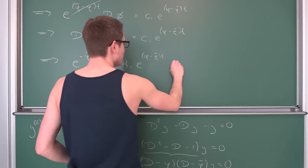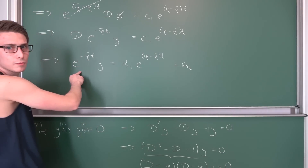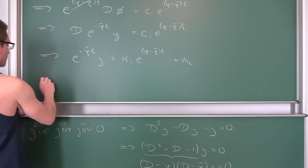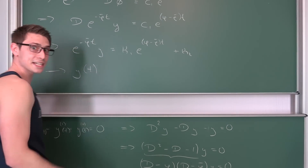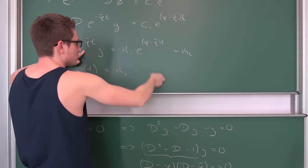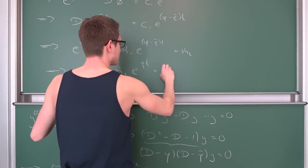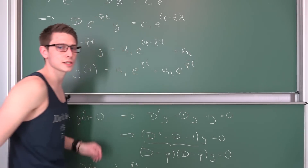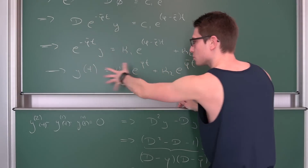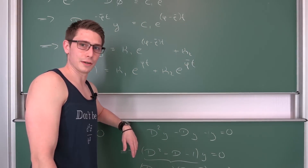Integrating both sides with respect to t gives us c₁ over (φ minus φ̄) times the exponential term — and some constant over another constant is just a constant. Meaning overall, we are going to give this new constant the name κ₁. We have e^(φ̄t) · y equals κ₁ · e^((φ−φ̄)t). After integration of our second order linear homogeneous ODE, we end up with another constant, κ₂. After all the integration and multiplying both sides by the multiplicative inverse of e^(−φ̄t) — which is e^(φ̄t) — we get the solution.